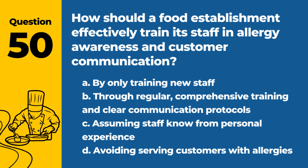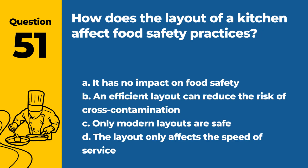Question 50. How should a food establishment effectively train its staff in allergy awareness and customer communication? A. By only training new staff. B. Through regular, comprehensive training and clear communication protocols. C. Assuming staff know from personal experience. D. Avoiding serving customers with allergies. Answer: B. Through regular, comprehensive training and clear communication protocols. Effective training in allergy awareness and customer communication involves regular, comprehensive training for staff and establishing clear communication protocols.